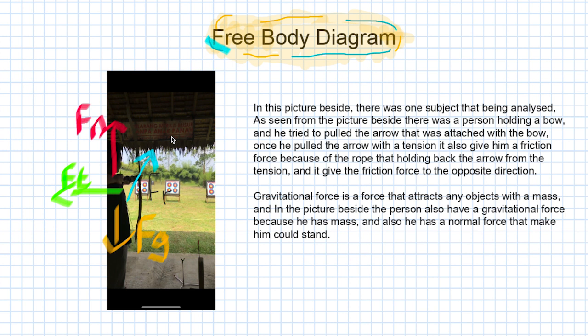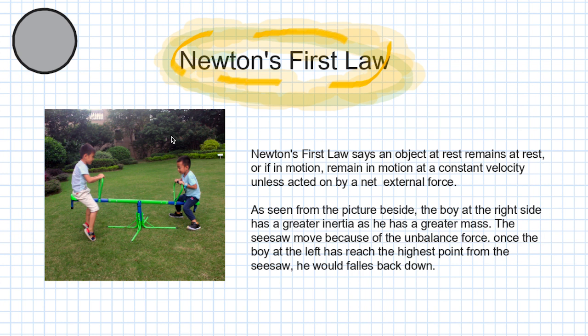Next is Newton's first law, which states that an object at rest remains at rest, or if in motion, remains in motion at a constant velocity, unless acted on by a net external force. As seen in the picture, the boy on the right side has greater inertia as he has greater mass. The seesaw moves because of the unbalanced force, and once the boy on the left reaches the highest point, he falls back down.